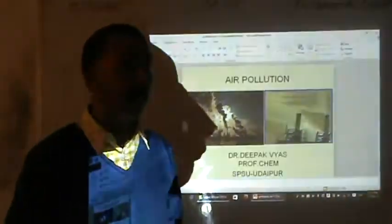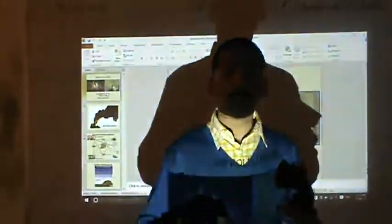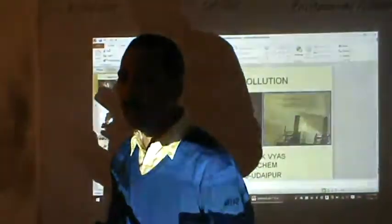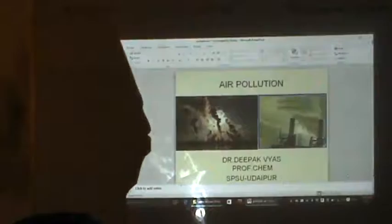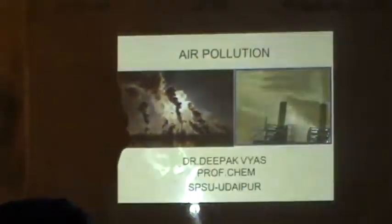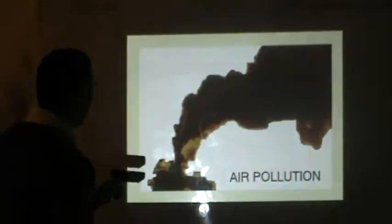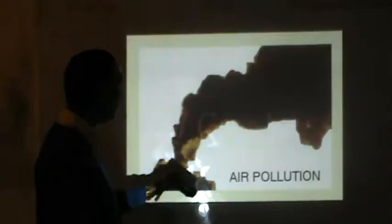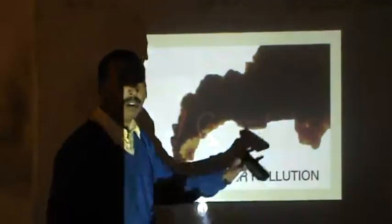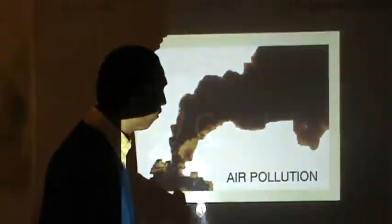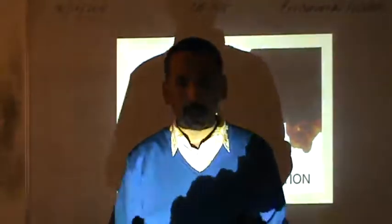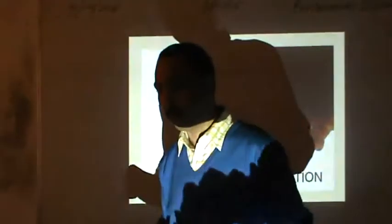First we need to understand what pollution actually is. Before starting the pollution topic, I will discuss some events which are observed, and then you will understand why there is a need to study this paper. This is an example of a plant — which may be an industry. You can see the black smoke which is liberated due to burning of fuel. Fuel is the major source of pollution, and almost all fuels found on this earth basically consist of carbon, hydrogen, nitrogen, sulfur, and a small amount of other substances.